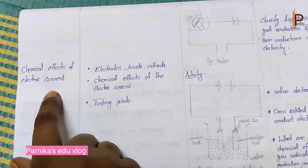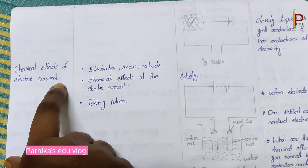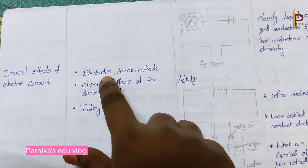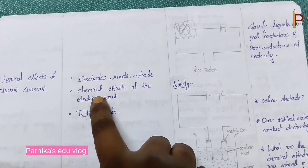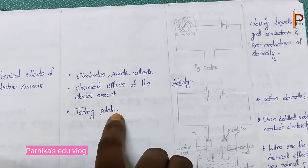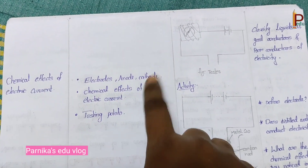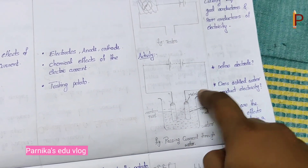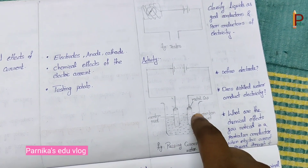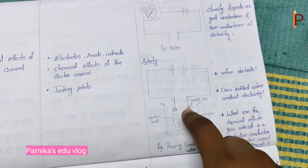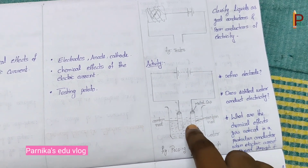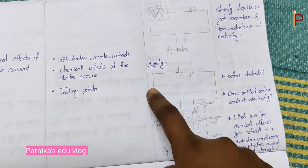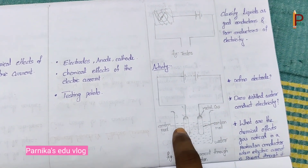Next, the subtopic name is chemical effects of electric current — this is the main concept. In this, we need to cover electrodes, anode, what is anode, what is cathode, chemical effects of electric current, and testing potato. These are the core points to be covered. For the activity, we need to perform it in the class itself. It requires two electrodes — that is, two carbon rods — a battery, a beaker, and water. These are the materials required.